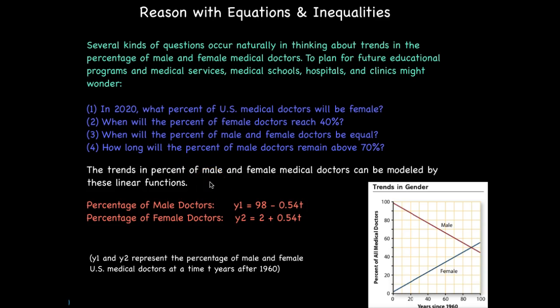The trends in percent of male and female medical doctors can be modeled by these linear functions. Here's a graph of what these look like. Notice the percentage of male doctors starts at 98 with a slope of negative 0.54. The percent of male doctors since the year 1960 has been steadily decreasing, whereas the percent of female doctors since 1960 has been steadily increasing. Y1 and Y2 represent the percentage of male and female doctors.